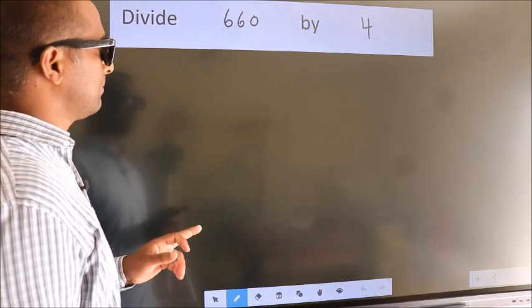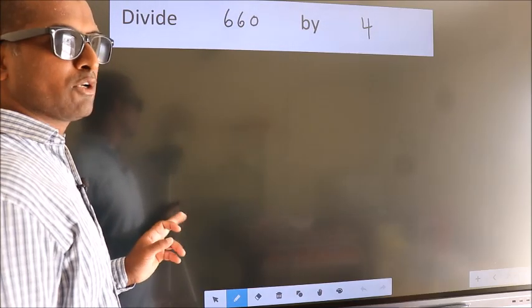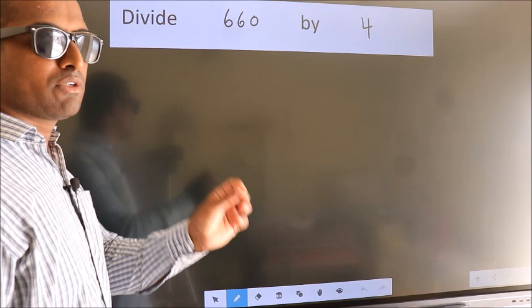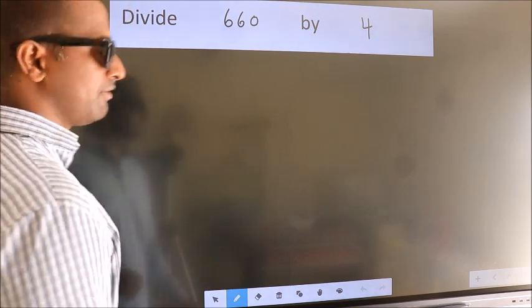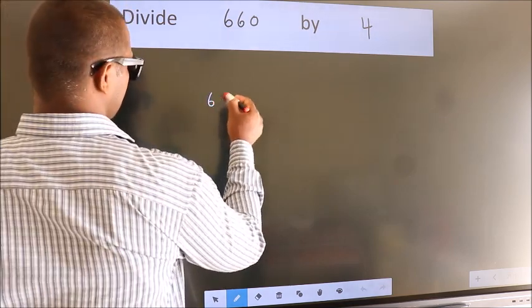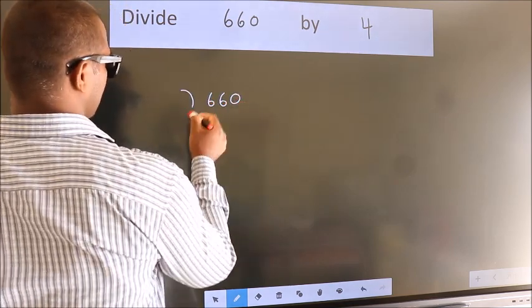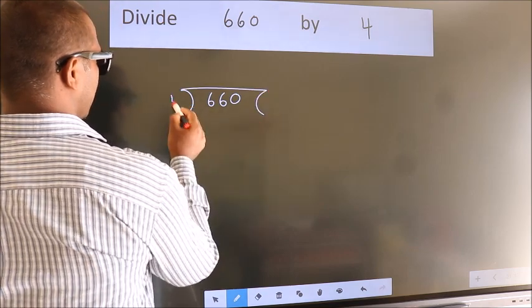Divide 660 by 4. To do this division, we should frame it in this way. 660 here, 4 here.